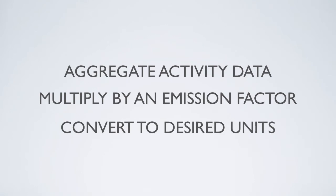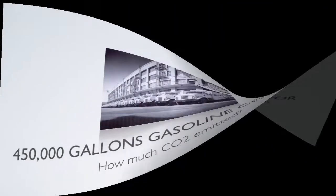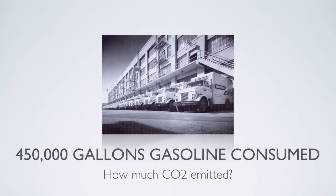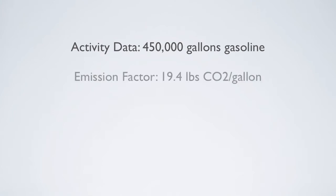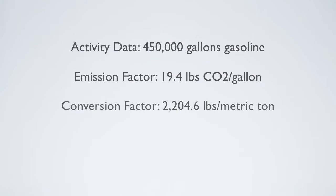The best way to consider this procedure is by example. A company has a fleet that consumed 450,000 gallons of gasoline last year. What quantity of CO2 was emitted in metric tons? The pertinent activity data is 450,000 gallons of gasoline, and the emission factor is 19.4 pounds CO2 per gallon of gasoline. We use a conversion factor of 2,204.6 pounds in any metric ton.